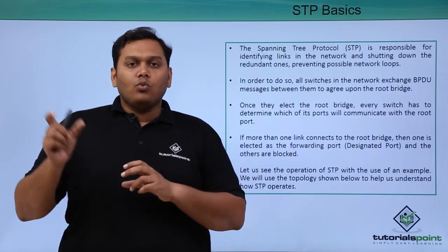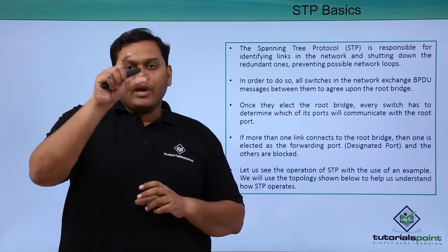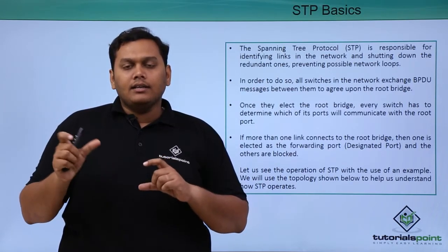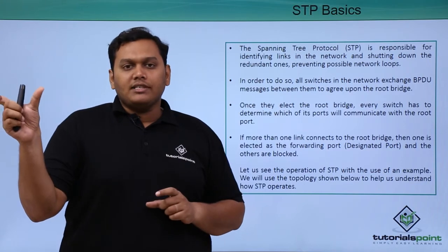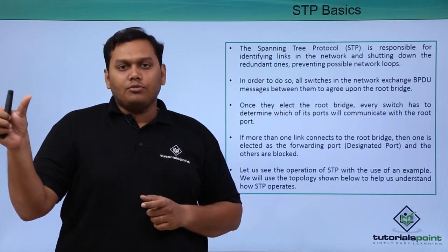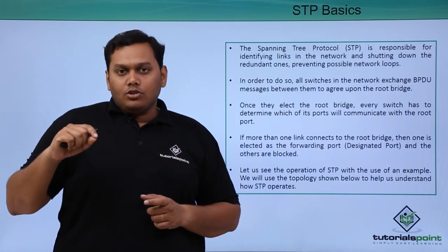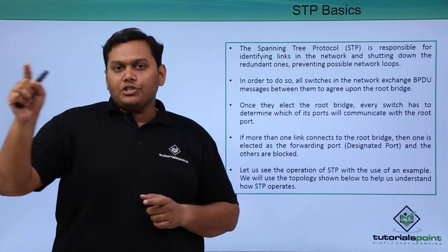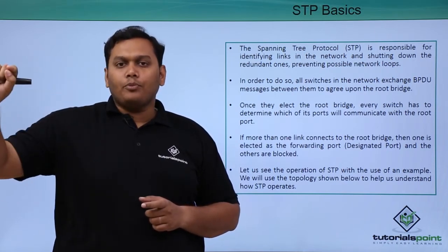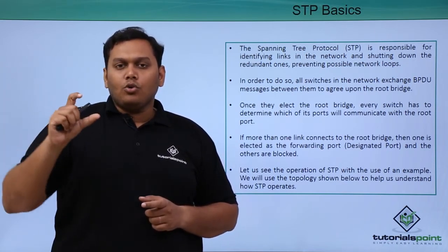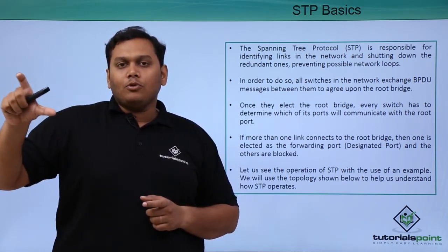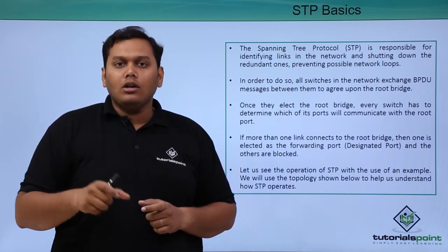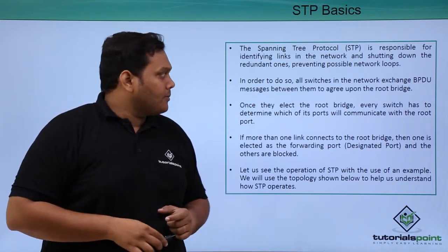When you have a network of three switches connected and one switch is elected as a root bridge switch, the other two switches will each have a root port. Only the designated port or forwarding port is elected and the rest are all blocked.